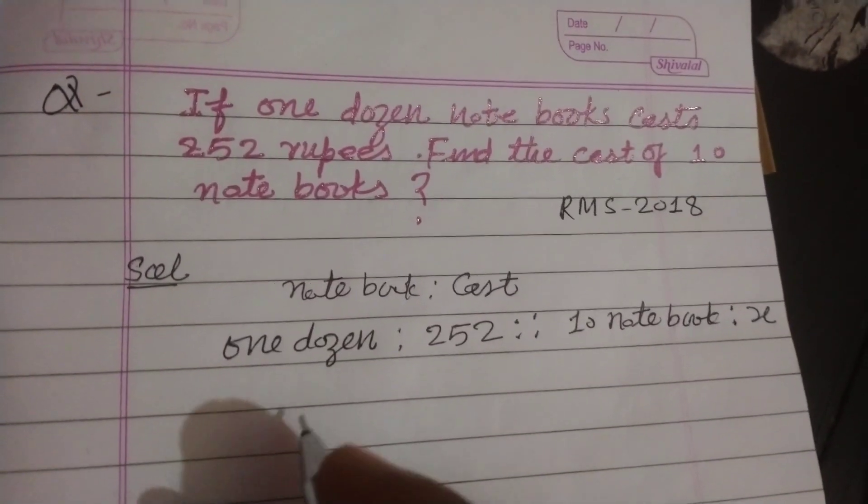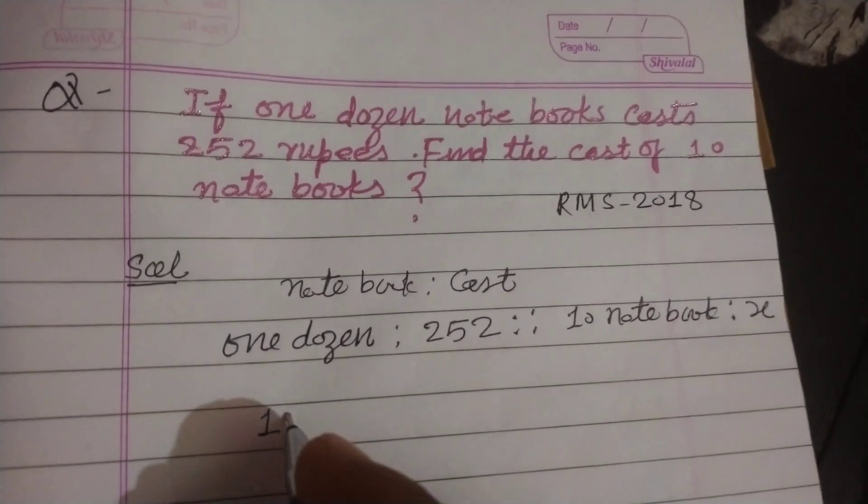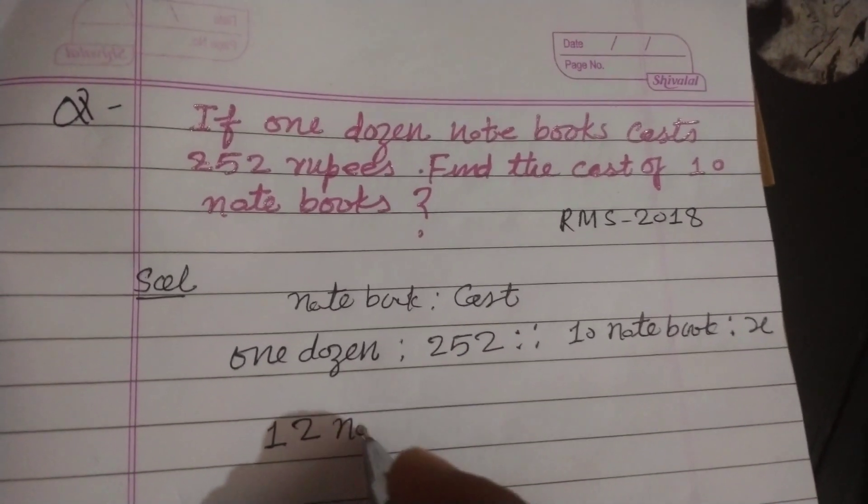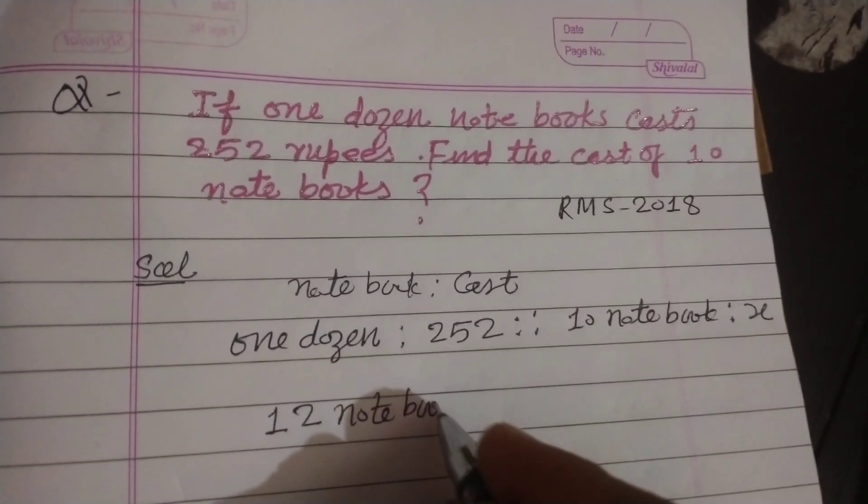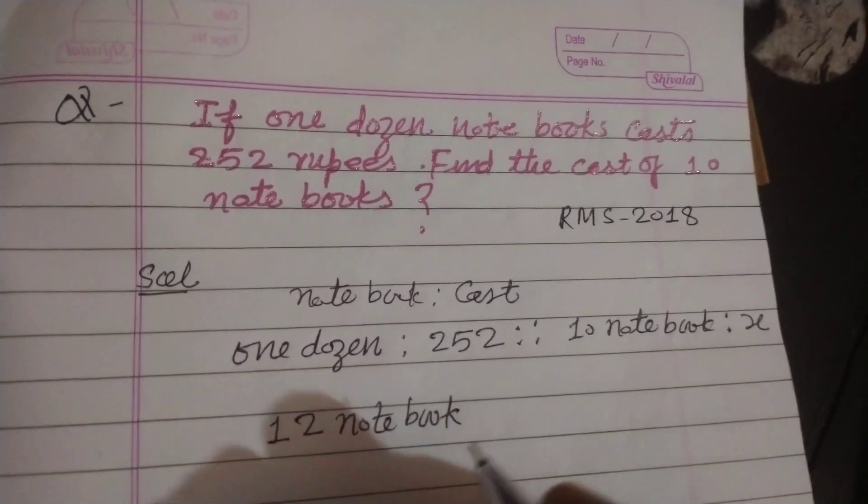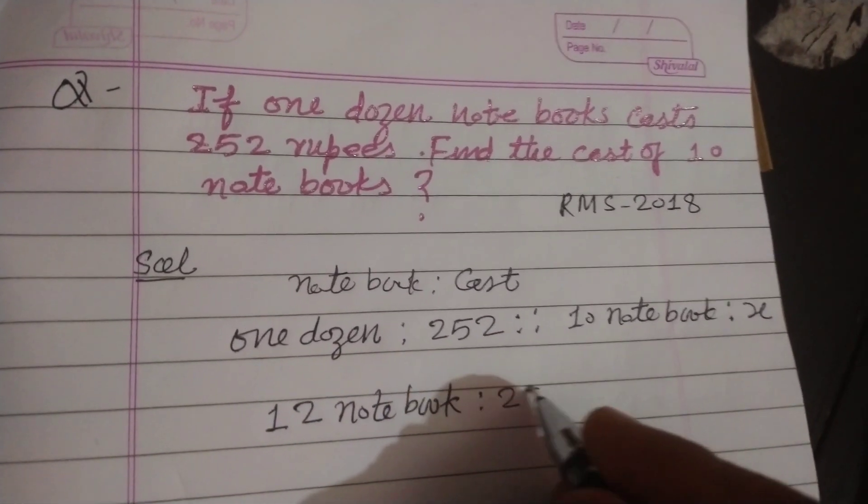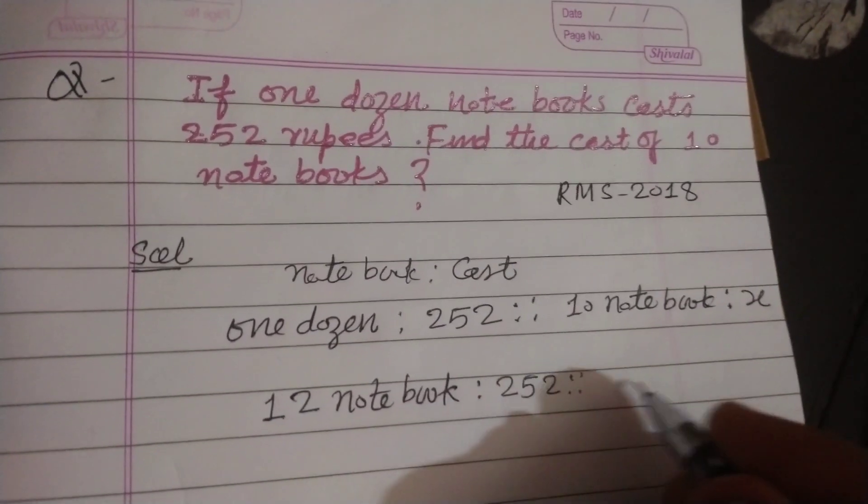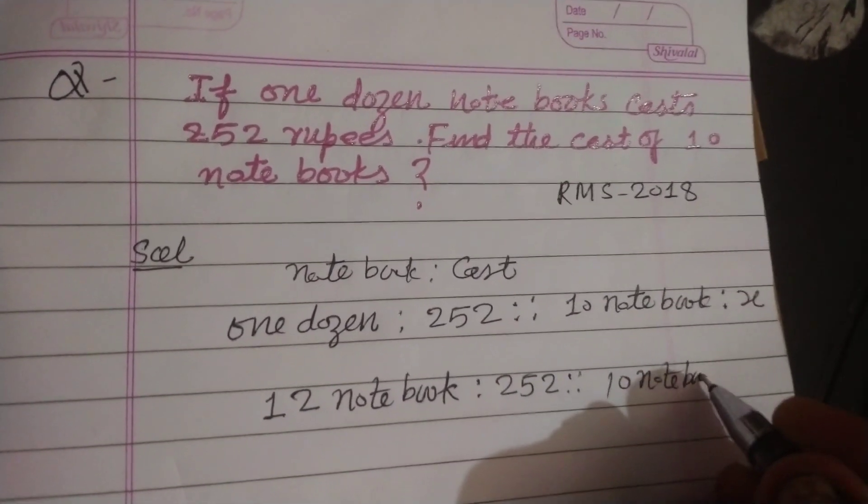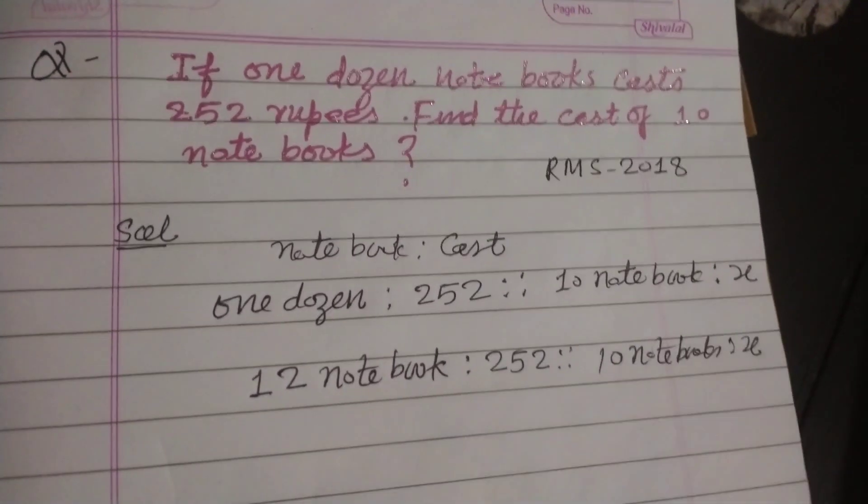And you know that one dozen have 12 items or 12 notebooks. One dozen notebooks means 12 notebooks ratio 252, proportion 10 notebooks, ratio x.